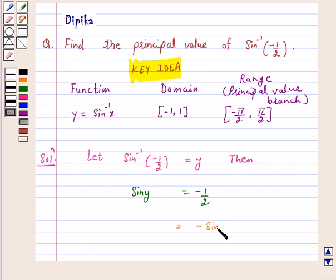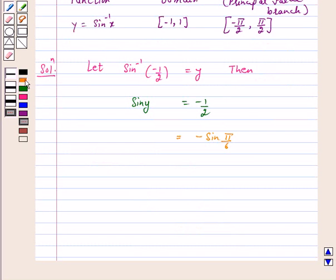This equals minus sine pi by 6, and this is again equal to sine of minus pi by 6, because sine of minus theta equals minus sine theta.